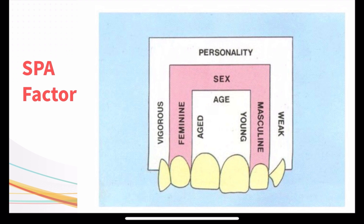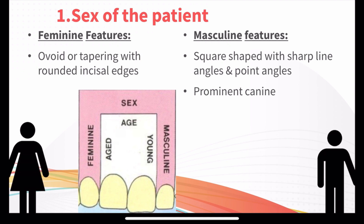The first factor is sex of the patient. We can give feminine features or masculine features. In case of feminine features, as you can see in the picture, you can give ovoid or tapering teeth with rounded incisal edges. The lateral incisor has rounded incisal edges and is ovoid in shape.